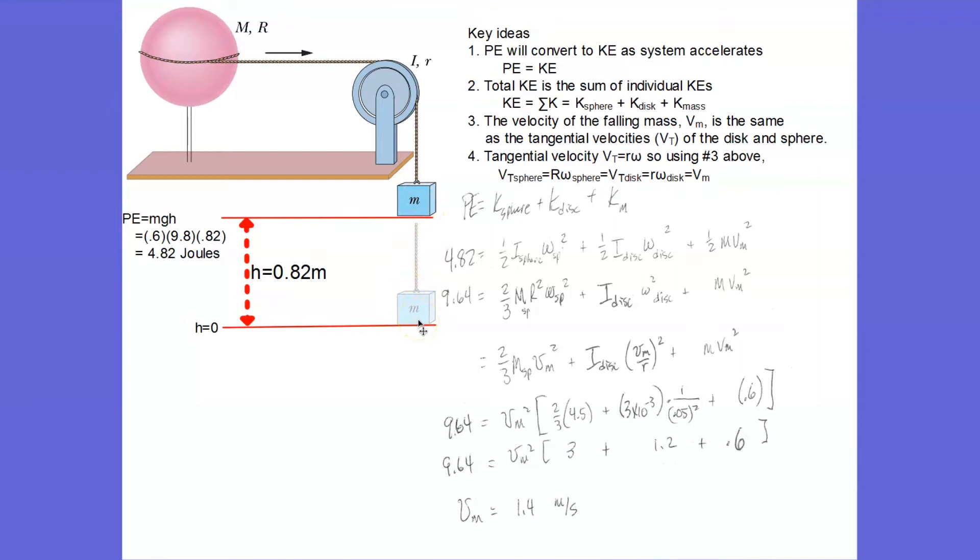Well, it becomes kinetic energy. But it's in three different places. This block is moving, this disk is moving, and this spherical shell is moving. So the potential energy that goes away here shows up in the kinetic energy of these three objects.